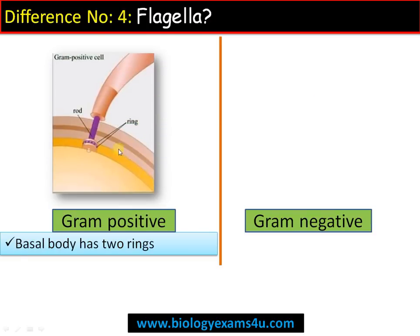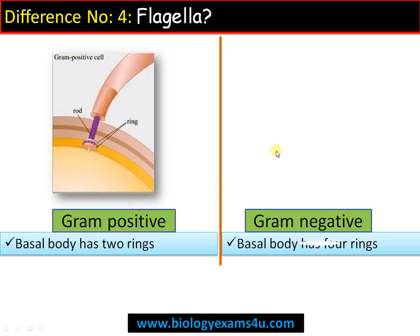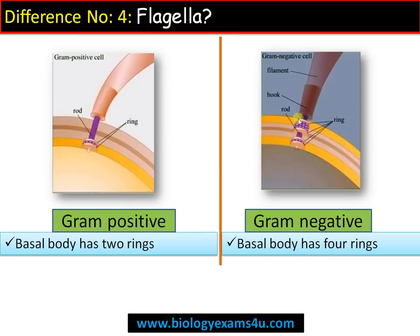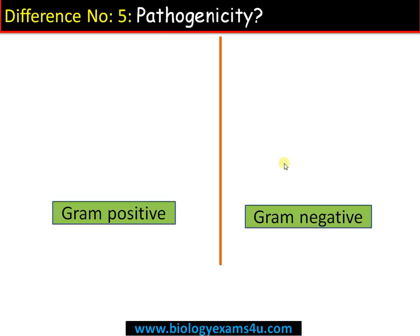Next is regarding the flagella. In the case of gram-positive bacteria, the basal body has two rings — the basal body is the region from where the flagella arises in a bacterium. Whereas in gram-negative bacteria, the basal body consists of four rings.